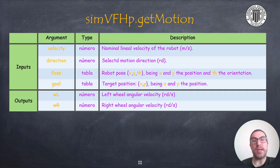And finally, the getMotion function allows you to obtain the angular speeds of the robot wheels. This requires the nominal linear speed, the selected direction, and also the robot pose and the target position.